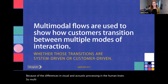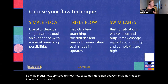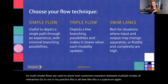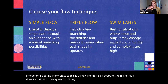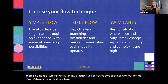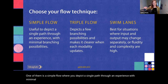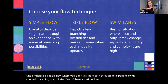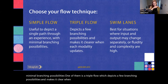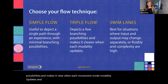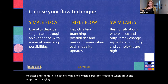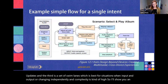Multimodal flows are used to show how customers transition between multiple modes of interaction. In my practice I've seen three things work: a simple flow depicts a single path through an experience with minimal branching; a triple flow depicts a few branching possibilities and makes clear when each modality updates; and swim lanes are best for situations when input and output are changing independently and complexity is high. I'll show you an example of each.